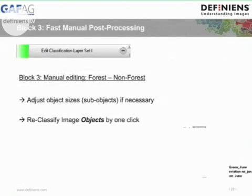After this semi-automatic classification step we have a first forest non-forest mask in block three. The next step would then be to do a manual editing on this forest non-forest mask, which is not yet perfect. In this manual step we can again adjust the object sizes and reclassify the image objects by one click.